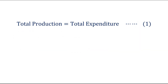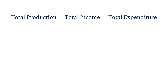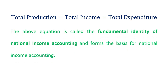We have seen that total production is equal to total expenditure, and we have also seen that total income is equal to total expenditure. Now from equation 1 and equation 2, we can come to a conclusion that total production equals total income equals total expenditure. This equation is called the fundamental identity of national income accounting, and it forms the basis for national income accounting.